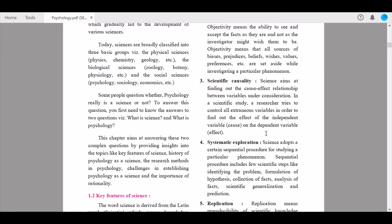Fourth is systematic exploration. Science adopts a certain sequential procedure for studying a particular phenomenon. There is a perfect procedure set so that you can study each and every phenomenon. This sequential procedure includes scientific steps like identifying the problem, formulation of hypotheses, collection of facts, analysis of facts, scientific generalization, and prediction. All of these play their own important roles in the systematic exploration of phenomena.